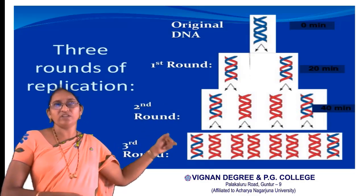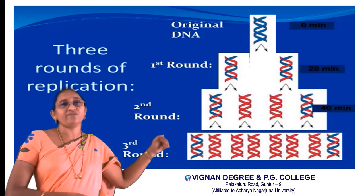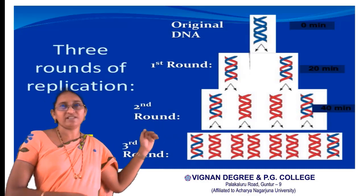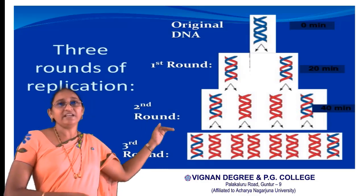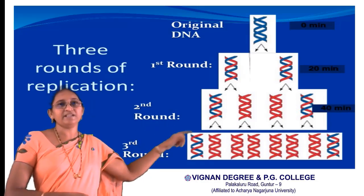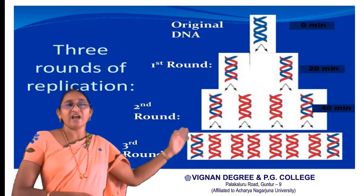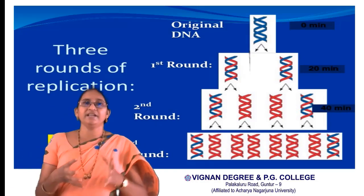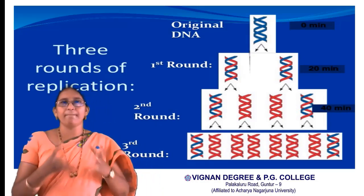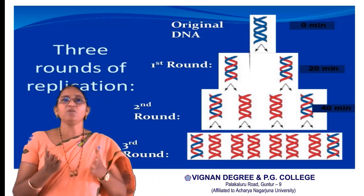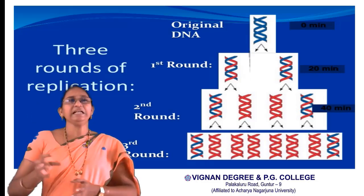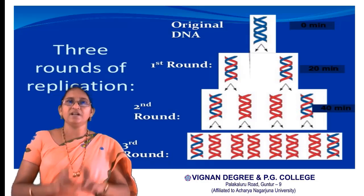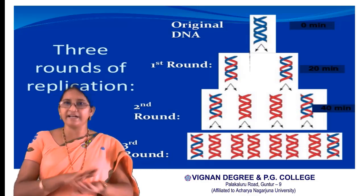Moving to the third round: the four molecules after another 20 minutes undergo replication, and from four, eight DNA molecules are formed. From these eight DNA molecules, two are hybrids and the remaining six are lighter. Again two bands are formed — the hybrid DNA molecules form a band at the middle, and the lighter molecules form a band at the top. The completely heavy molecules containing both N-15-labelled strands would form a band at the bottom.